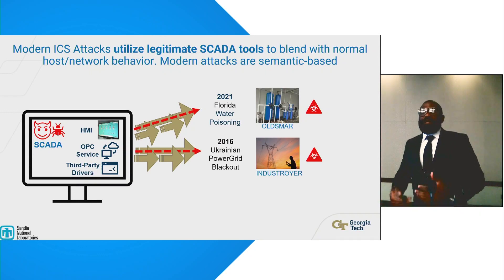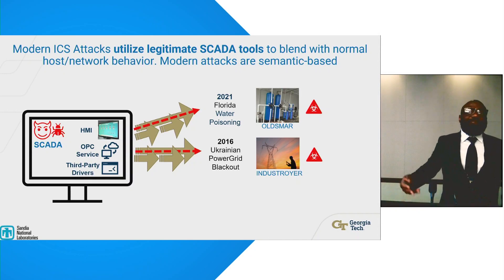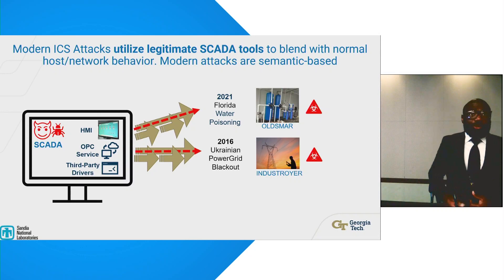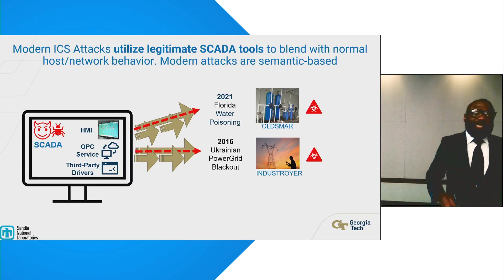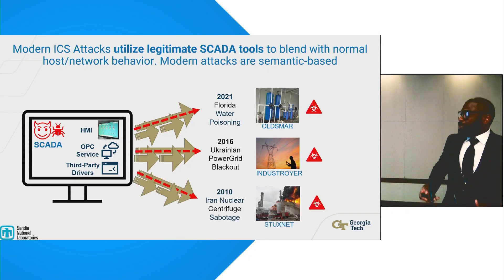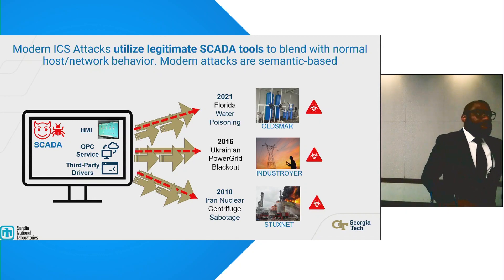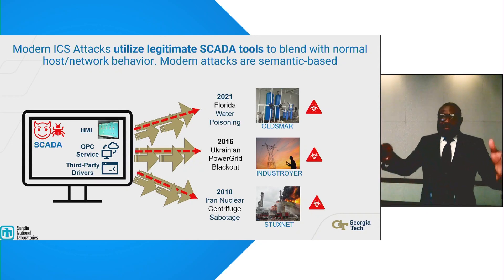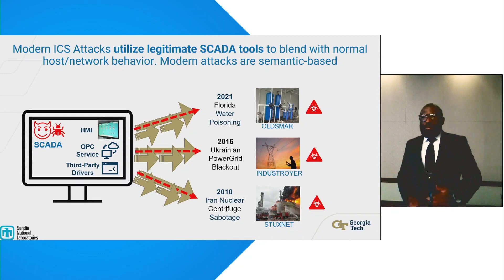In 2016, we had the Ukrainian power grid attack by the malware called Industroyer. This malware made use of OPC services in the SCADA environment to retrieve the target device tag — in this case, a circuit breaker — and was able to disrupt it. OPC stands for Open Platform Communication, a service used in SCADA to allow interoperable components. Also, Stuxnet disrupted the Iranian nuclear centrifuge: the malware came from the IT side, exploited zero days, found itself in the SCADA side, infected Siemens SCADA programs and drivers, and reprogrammed the PLCs.